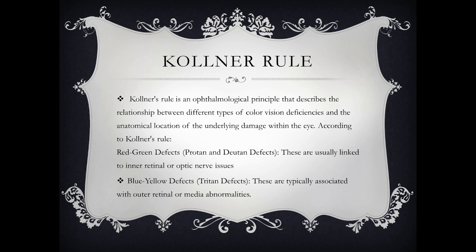In contrast, when there is a defect in the outer retina or media — such as a defect in the macular area — there is a blue-yellow defect. The S cones, or short wavelength cones, are responsible for blue-yellow differentiation. When the S cones are affected, it produces a blue-yellow defect, indicating damage to the outer retina.